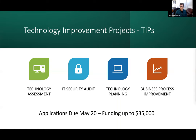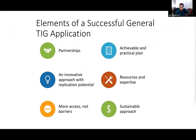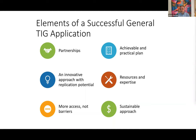Many times people ask us: what can we do to make our TIG applications better? We've come up with some general guidelines on things that really make applications more fundable. First, partnerships — these are really important, and I'll talk about them more fully later. The next element is an achievable and practical plan; when we look at what you're thinking about doing, we want to make sure it's feasible. This is a threshold criterion for us.